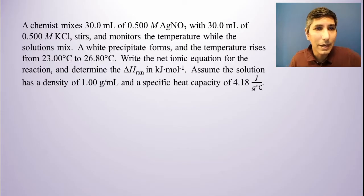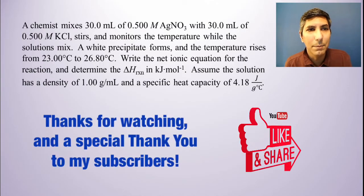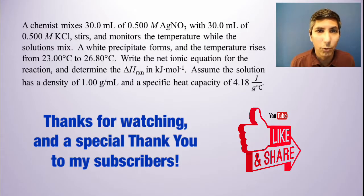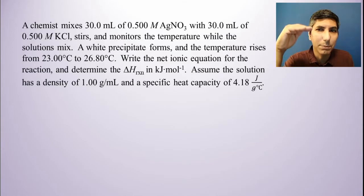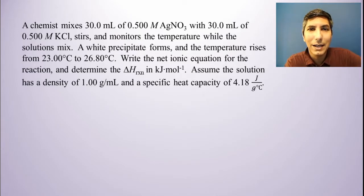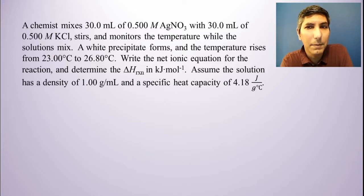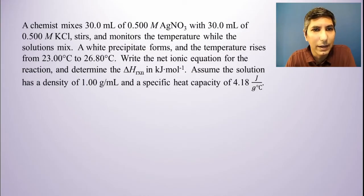Now, let's do an example here. It says a chemist mixes 30.0 milliliters of 0.500 molar silver nitrate with 30 milliliters of 0.500 molar potassium chloride, stirs, and monitors the temperature while the solutions mix. A white precipitate forms, and the temperature rises from 23.00 degrees Celsius to 26.80 degrees Celsius. So kind of a long problem. Looks like there's a lot going on here.